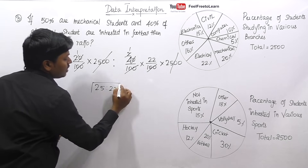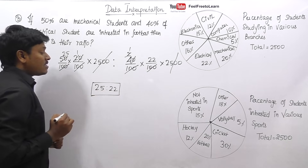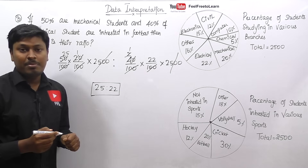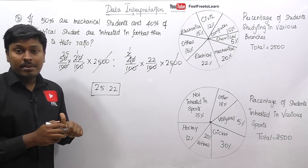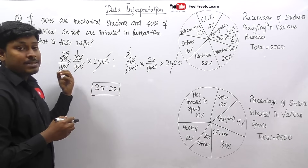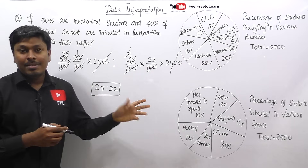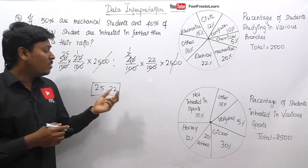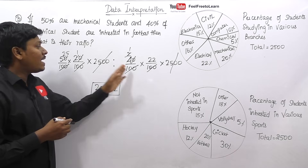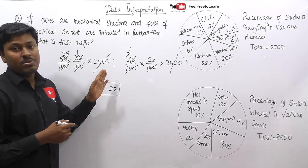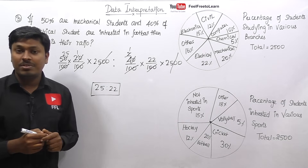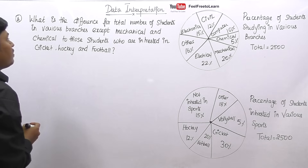The answer is 25 : 22. The important tip here: don't waste time calculating left-side and right-side values separately before finding the ratio. Write all values together so you can cancel directly and get the ratio faster in your exams.